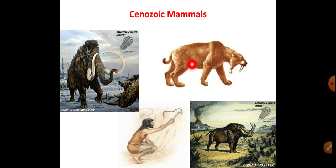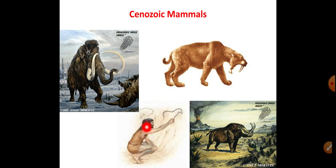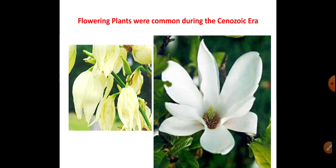Some Cenozoic animals include the ancestors of elephants, tigers, and lions. Our human ancestors used to hunt and live in wild conditions. Hippopotamus, rhinoceros, and many other mammals were present. Flowering plants were also common during the Cenozoic era.